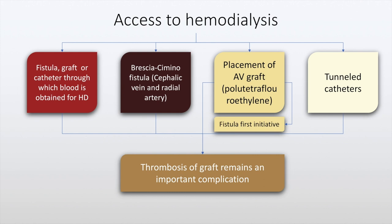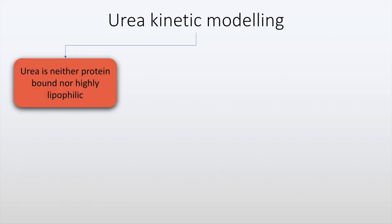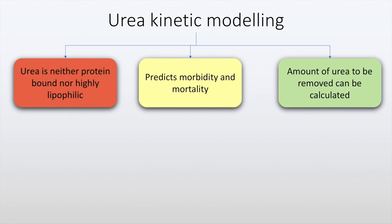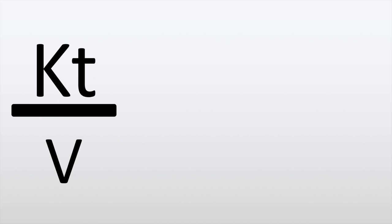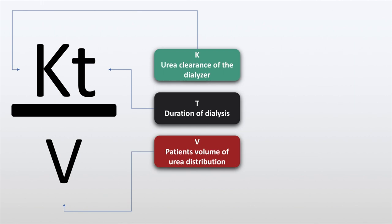The calculation of efficiency of dialysis is based on urea kinetic modeling. Urea is neither highly protein bound nor lipophilic. As a result, it predicts morbidity and mortality and the amount of urea to be removed can be calculated. The first technique used is urea reduction ratio. The second technique is KT/V. In this formula, K is the urea clearance of the dialyzer, T is the duration of dialysis, and V is the patient's volume of urea distribution. KT/V is generally 1.4 for intermittent hemodialysis and at lower values for other modalities of dialysis.